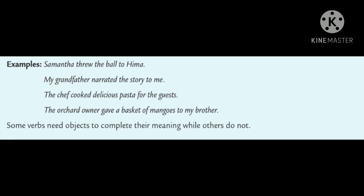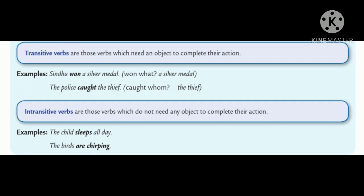Some verbs need objects to complete their meaning, while others do not. Transitive verbs are those verbs which need an object to complete their action. Example: Sindhu won a silver medal. Won what? A silver medal. Second, the police caught the thief. Caught whom? The thief.